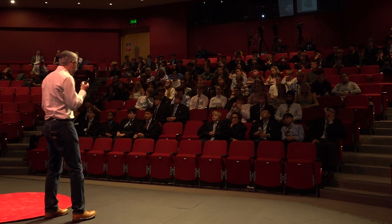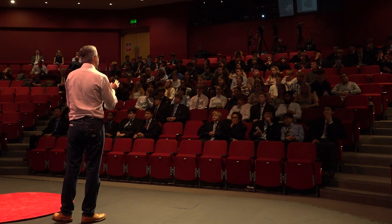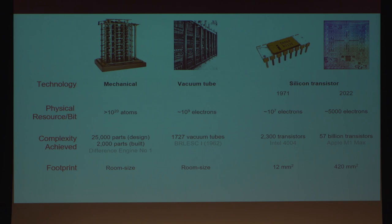Each of these different ways of building computers was the leading technology in its day, but the first two rapidly reached limits in scalability. Only the silicon transistor was able to demonstrate a million-fold increase in complexity, from the first microprocessors that contained thousands of transistors to processors today that have tens of billions. Let's look at the physical resource used to encode a piece of information. In early mechanical machines, we're talking about vast Avogadro-scale numbers of atoms used to encode information within gears. Moving to vacuum tubes, billions of electrons. But by moving to silicon transistors, we set a path where the basic unit of information went from millions of electrons to just a few thousand used in transistors today.